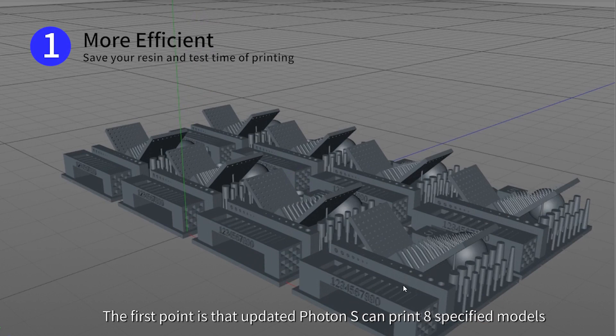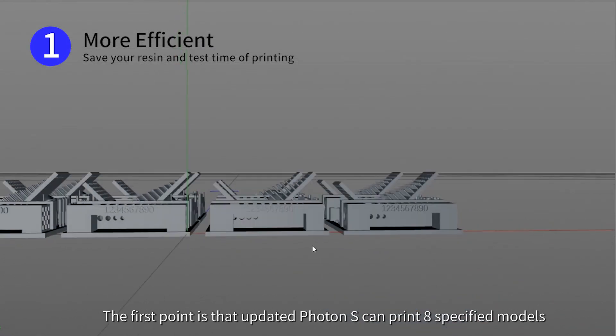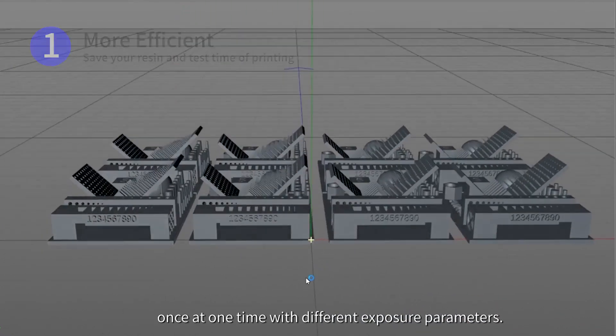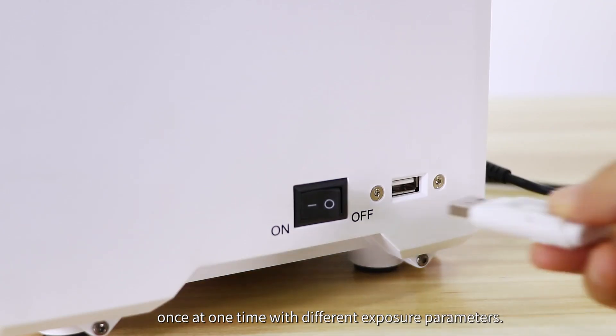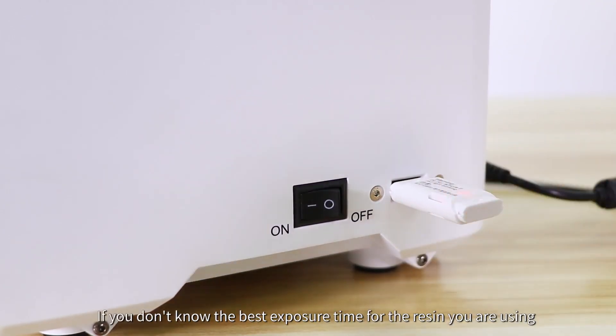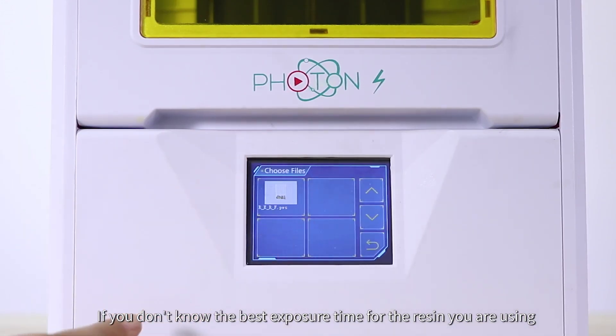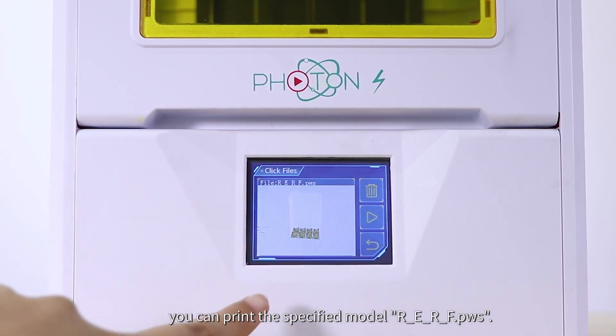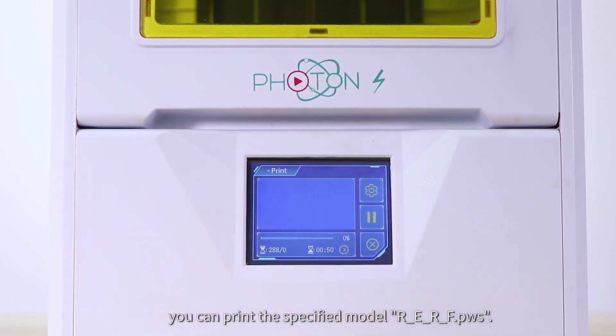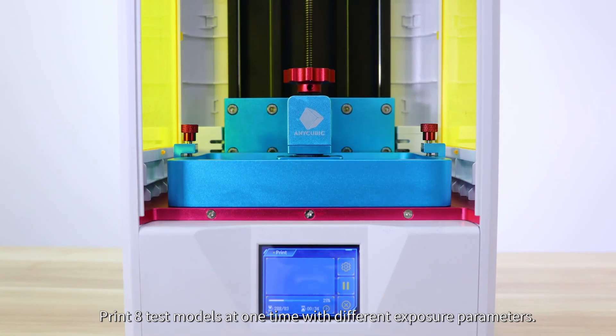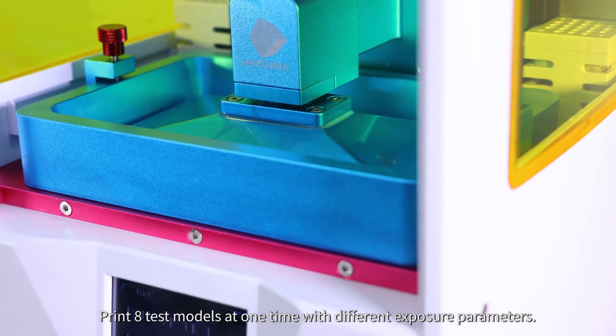The first point is that upgraded Fortin S can print 8 specified models once at one time with different exposure parameters. If you don't know the best exposure time for the resin you are using, you can print the specified model file. Print 8 tested models at one time with different exposure parameters.